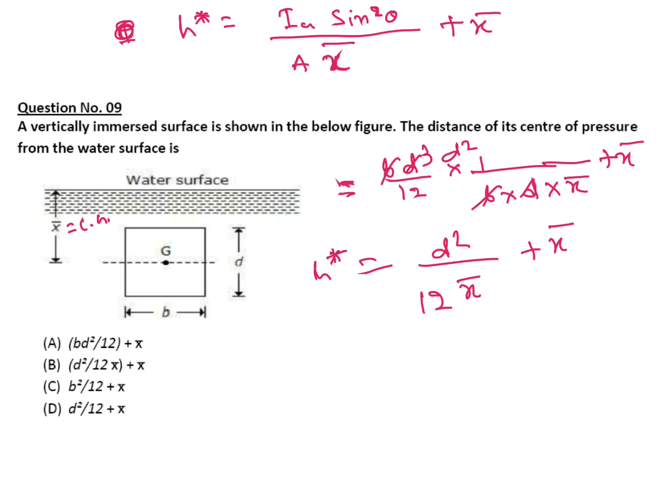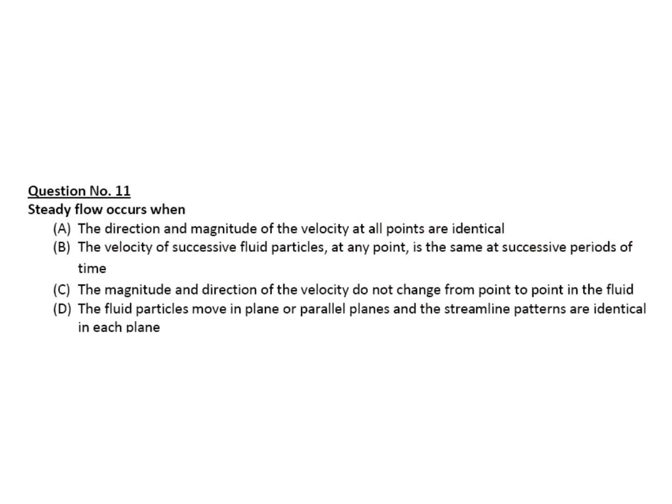This is your center of pressure, so B is your correct answer. Sometimes they may give some values also, b value, d value, then you have to find out h star value. And x bar value also they will give. Just put the formula, put the values in the formula and you will get your answer within one minute.